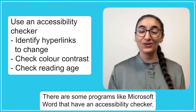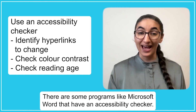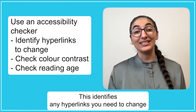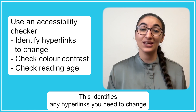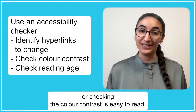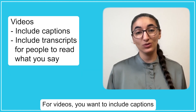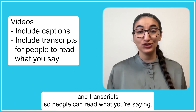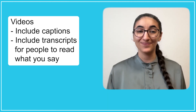There are some programs like Microsoft Word that have an accessibility checker. This identifies any hyperlinks you need to change, or checks that the colour contrast is easy to read. For videos, you'll want to include captions and transcripts so people can read what you're saying.